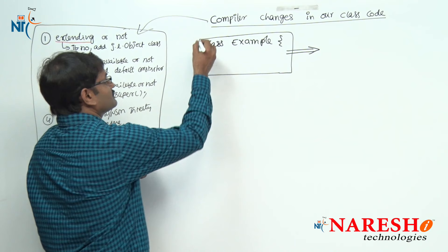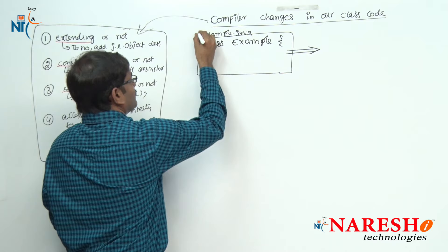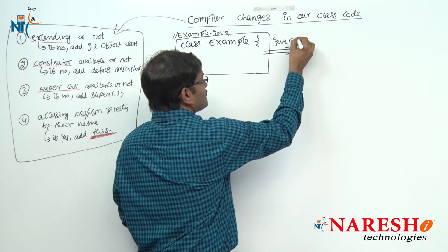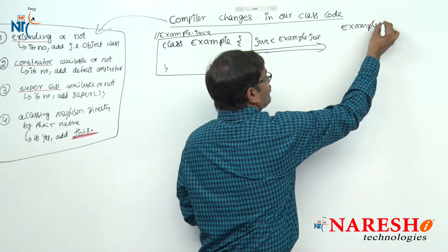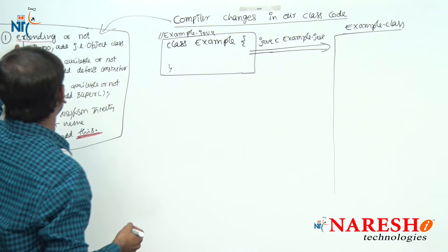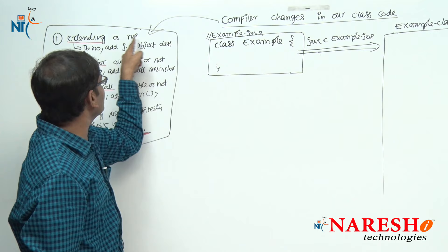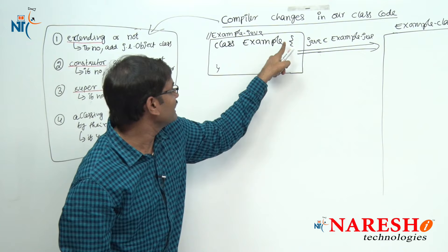This is example.java. I compile with the command javac example.java. We get example.class. Now observe: what are the changes coming in example.class? First point — compiler is checking: is this class extending from any other class? No, extends is not there — it is not extending.